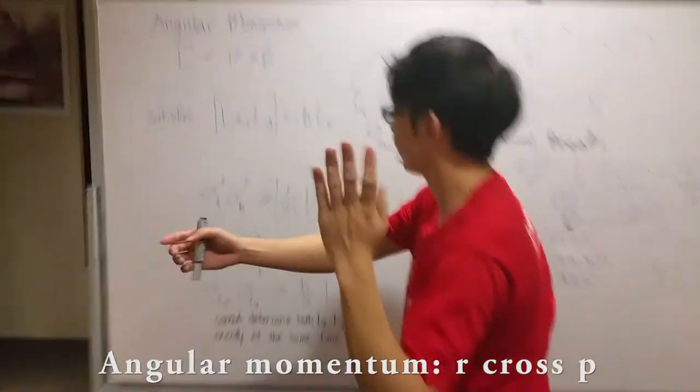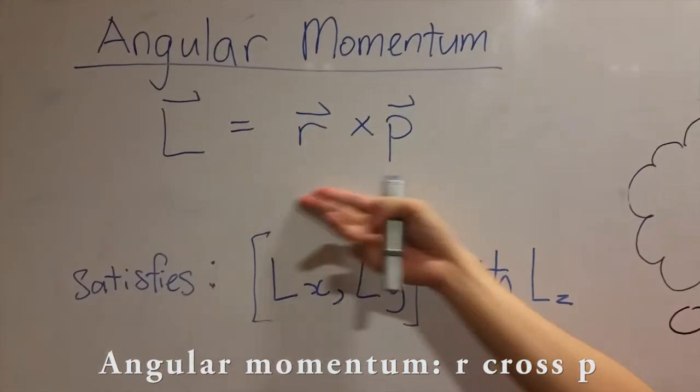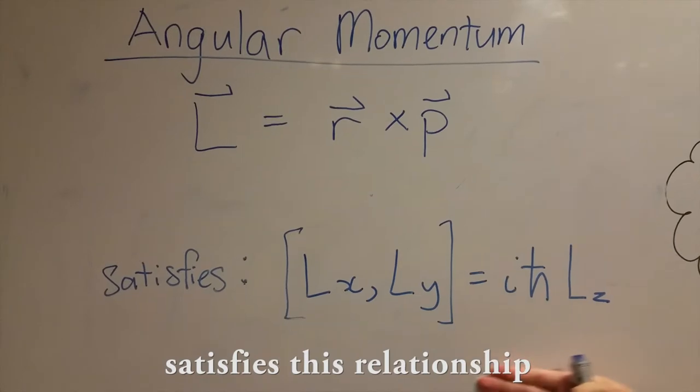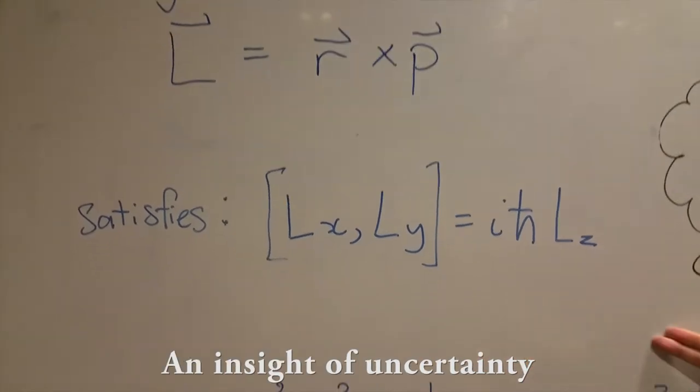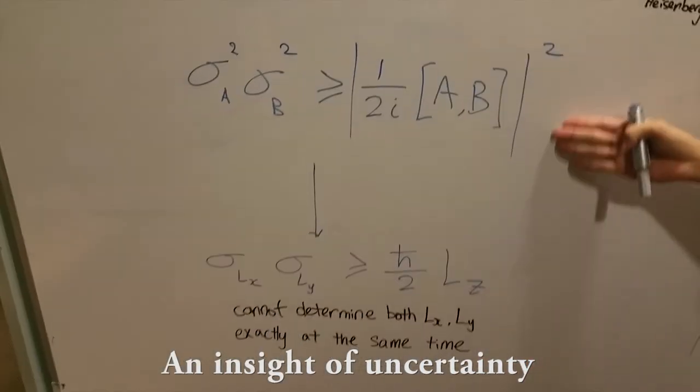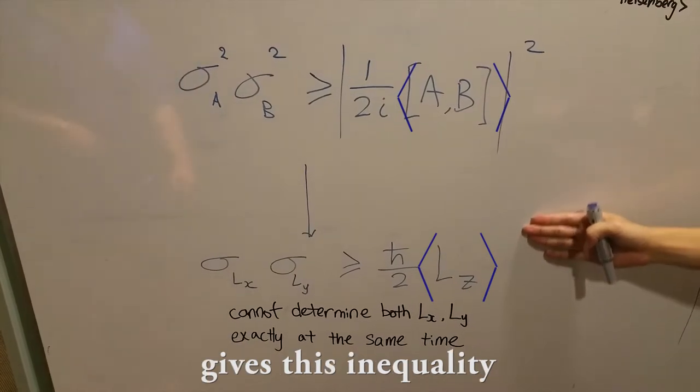And give the momentum up or speed, satisfies this relationship. And inside of uncertainty, gives this inequality.